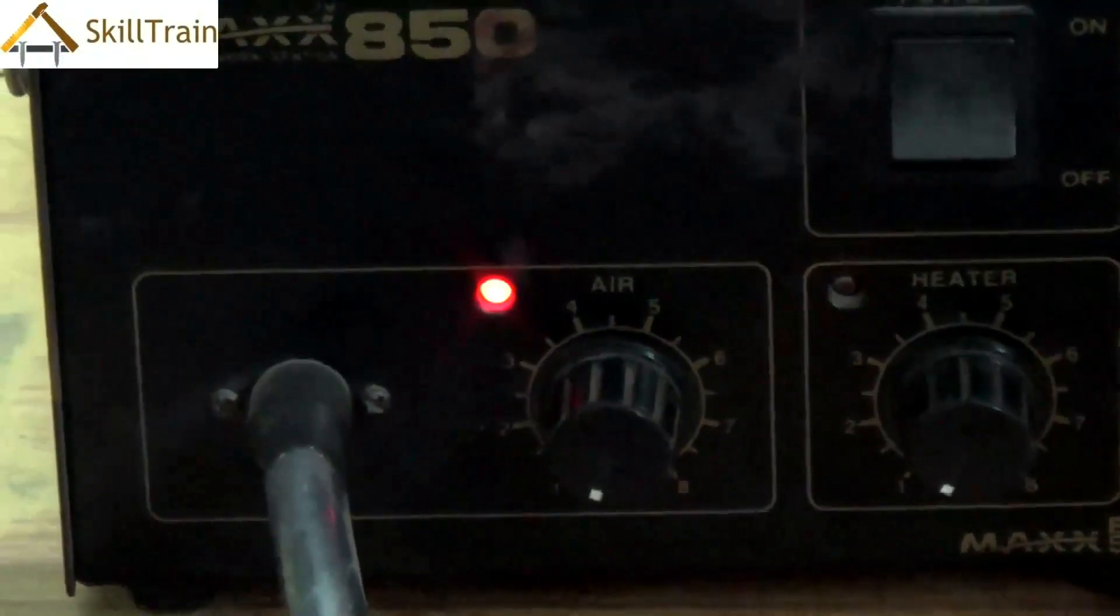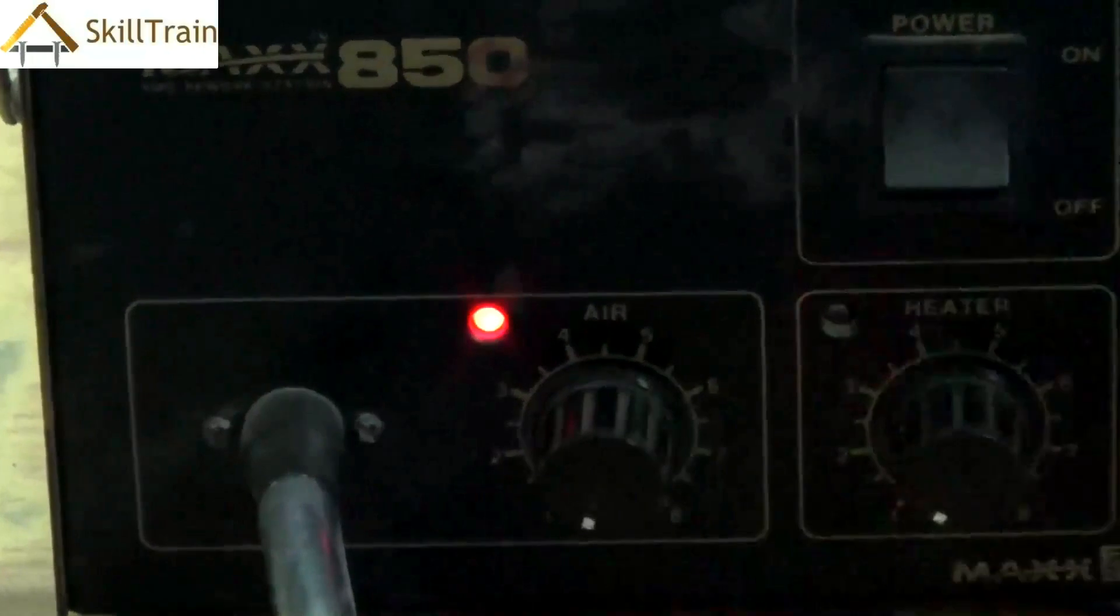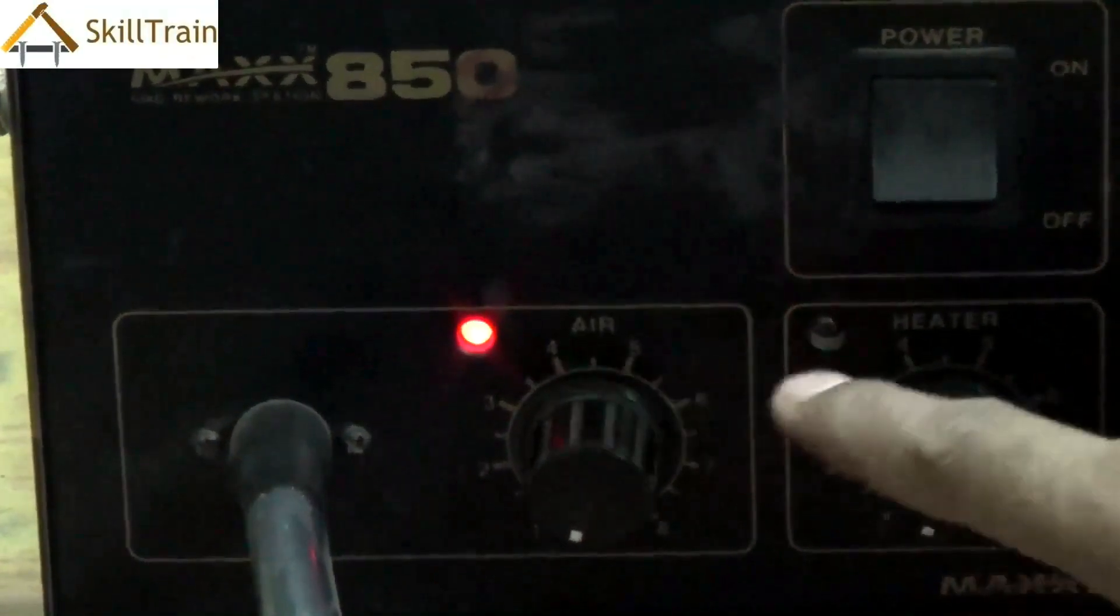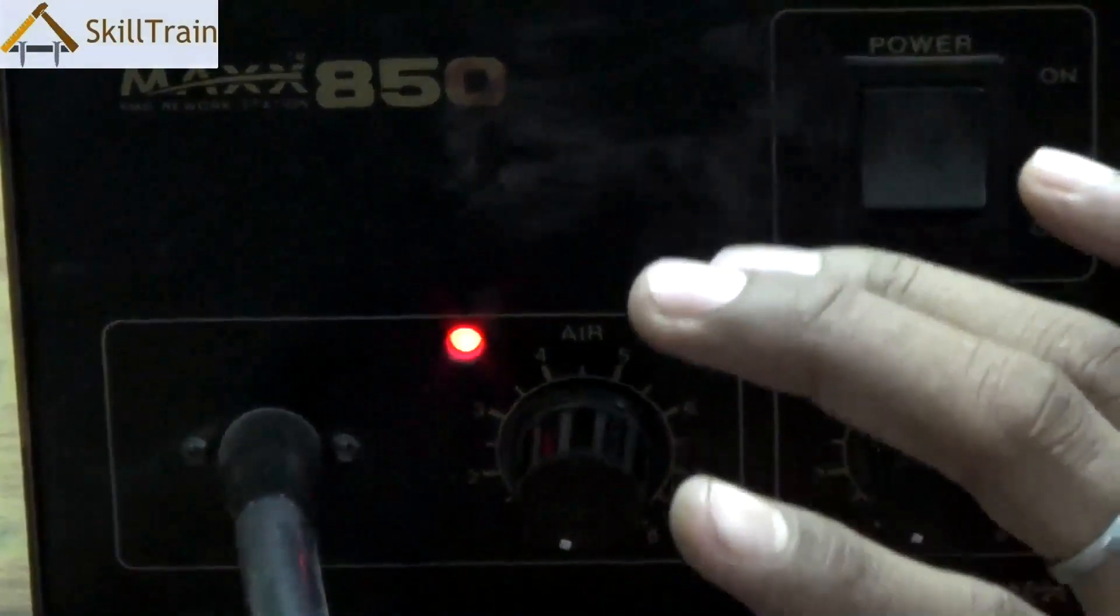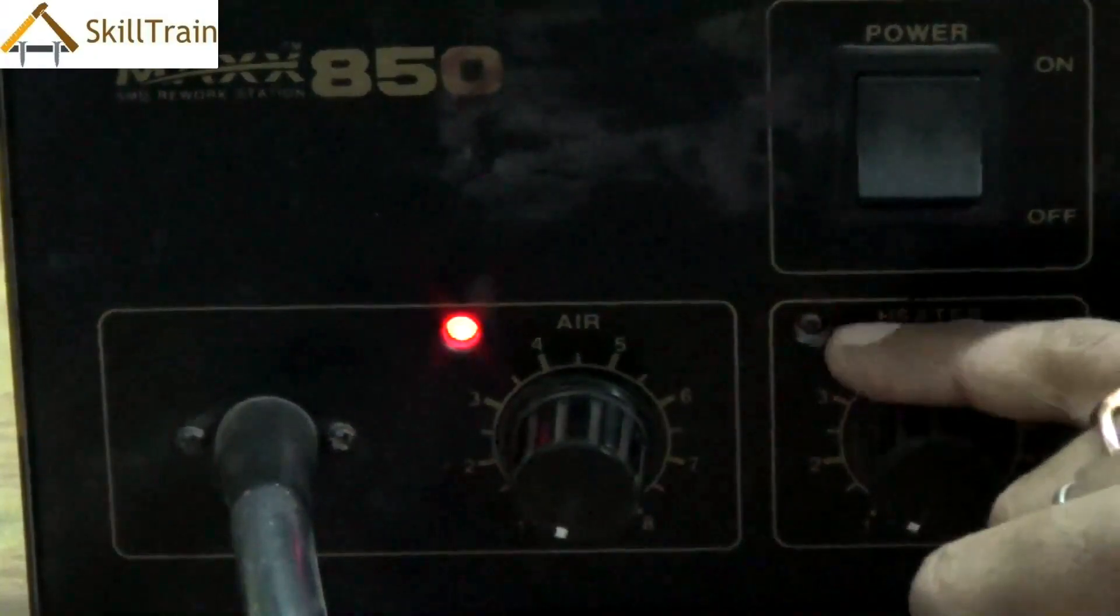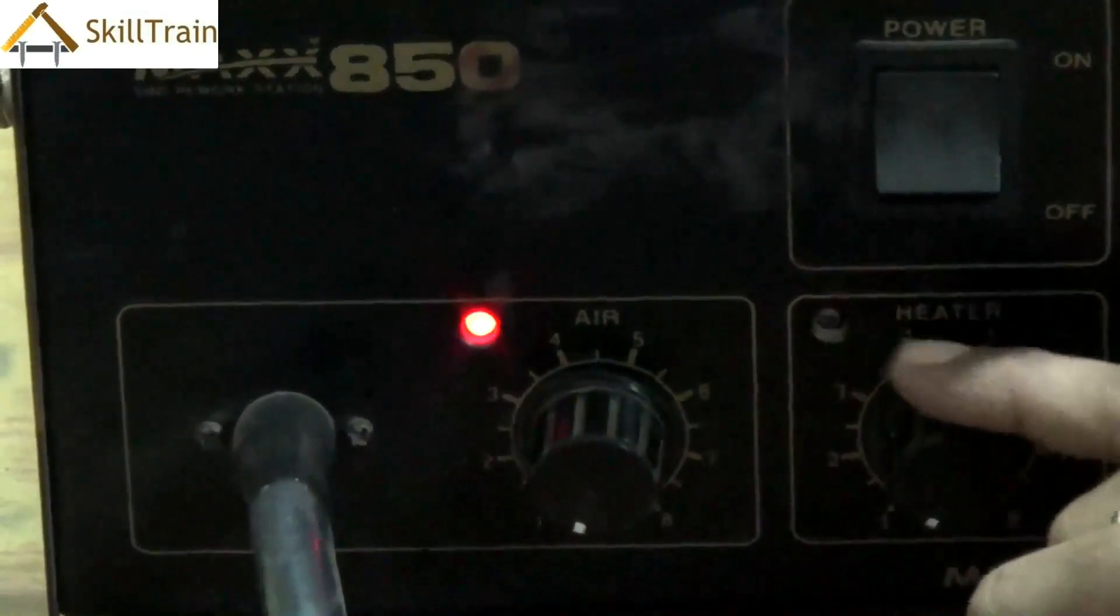Now while you're doing it, ensure that the knob on air and heater is kept at the lowest position and you could see there are two lights. One is an indicator for the air as well as the main indicator for SMD. The other blinking one is the indicator for the functioning of the heater. So the blinking light basically means that the heater is also functioning appropriately.